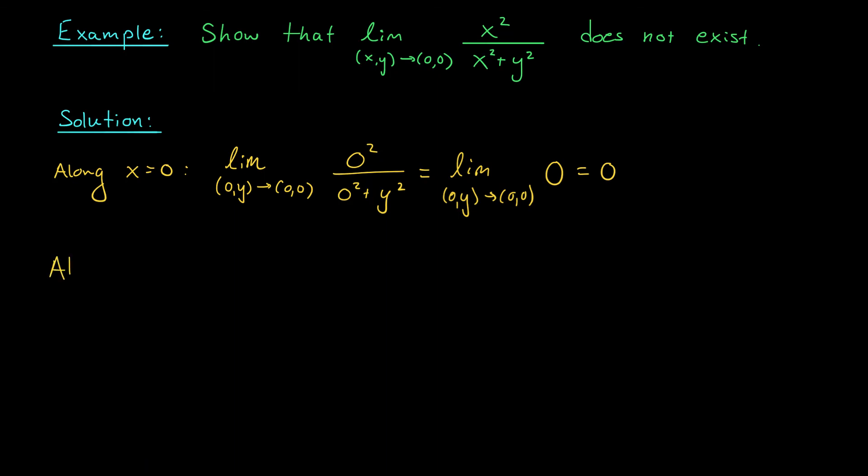What happens if we come in along the x-axis, along the path where y is equal to 0? Well, in that case, we're considering the limit as (x,0) goes to (0,0) of x² over x² plus 0². Now my function is exactly 1. Our function is 1 along the x-axis. So as x goes to 0, we get a limit of 1. Okay. Along the line x equals 0, we have a limit of 0. But along the line y equals 0, we have a limit of 1.